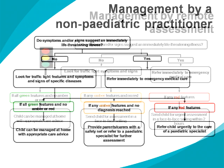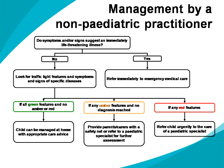Can you please outline the advice about management by a non-paediatric practitioner? Again we need to decide whether symptoms and or signs suggest an immediate life-threatening illness. If they do, refer immediately to emergency medical care. If not, look for traffic light features and symptoms and signs of particular diseases. If all green and no amber or red, the child can be managed at home with appropriate care advice. If any amber features and no diagnosis reached, provide parents or carers with a safety net or refer to a paediatric specialist. If there are any red features, refer the child urgently to the care of a paediatric specialist.